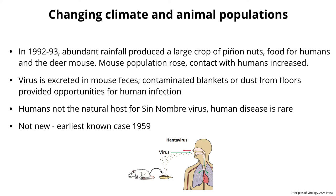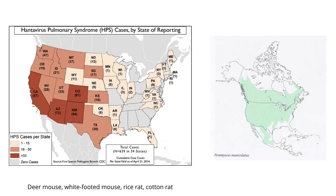Hantavirus pulmonary syndrome is pretty rare — something like a total of 639 cases in 34 states as of April 2014. This virus is found not only in deer mice but in the white-footed mouse, the rice rat, and the cotton rat. The deer mouse is present mostly throughout the U.S. — don't play with wild mice.